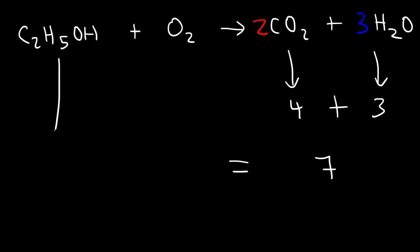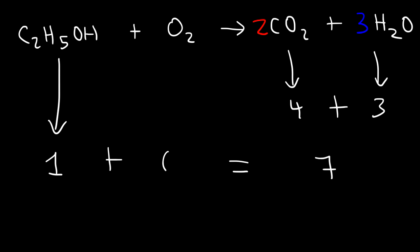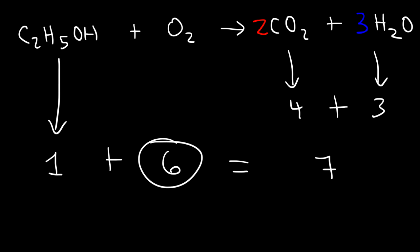I already have 1 oxygen atom in ethanol, so to get a total of 7 on the left side, I need 6 more. 6 ÷ 2 = 3, so I put a 3 in front of O₂. This reaction is now balanced.